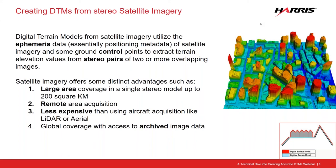So if you look at the top of a building and it's in two different spots in two different images, the software and the stereo viewing environment enables you to extract a height value for that based on the ephemeris data. That ephemeris data is essentially the attitude of the sensor in space — where it's located, its roll, pitch, and yaw — a whole set of parameters that account for the accurate location of the image scene.